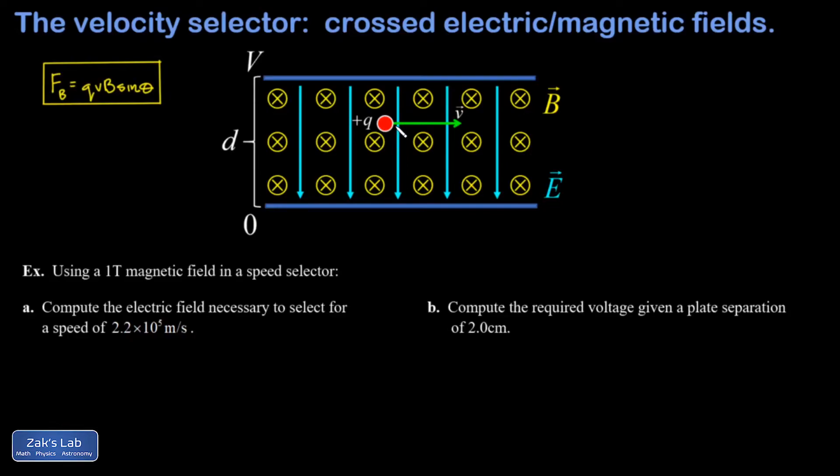First, the electric force direction is found by looking at the direction of the field and then realizing we have a positive charge, so the force is going to be the same direction as the field direction, and I'll call that Fe.